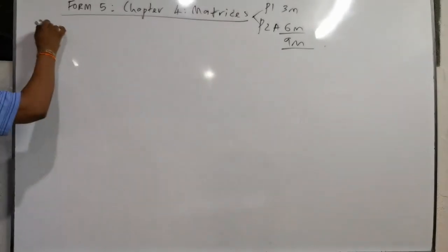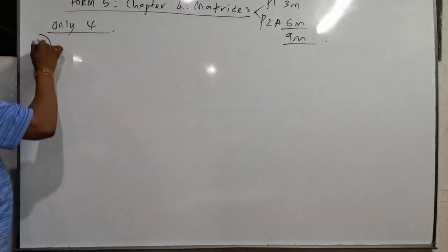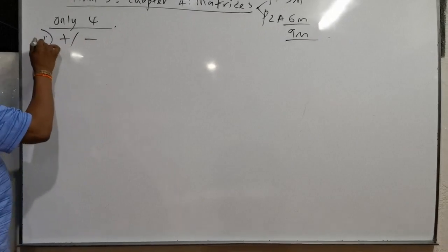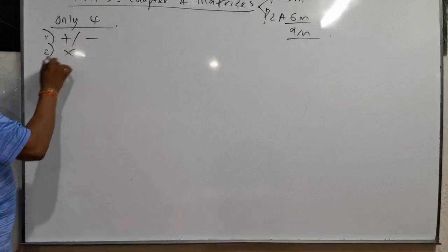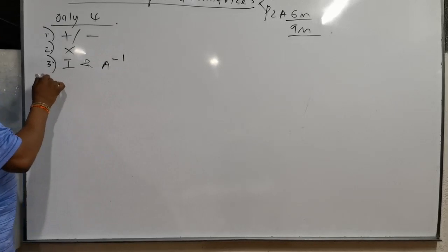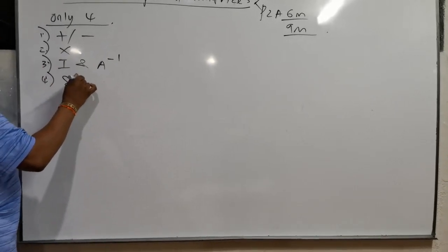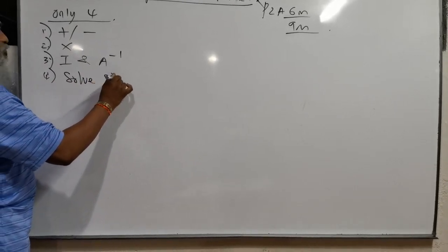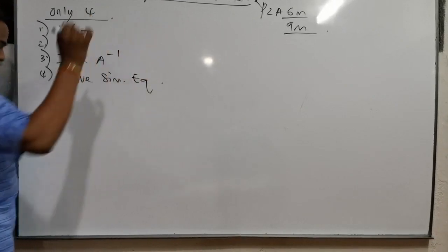There are only four aspects you need to know. First, you must know how to add and minus. Second is multiplication. Third, you must know identity and inverse. And finally, solve simultaneous equations by matrix method.